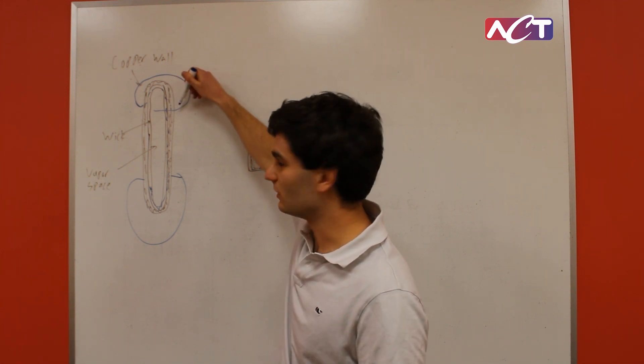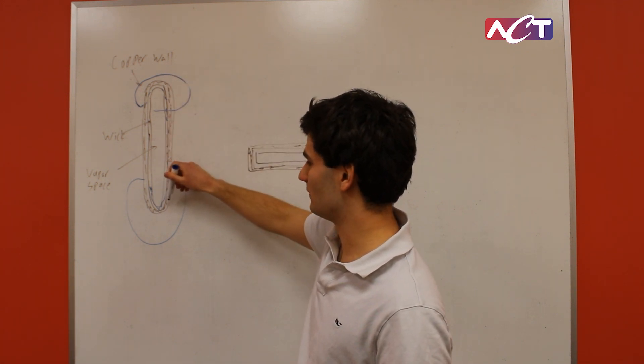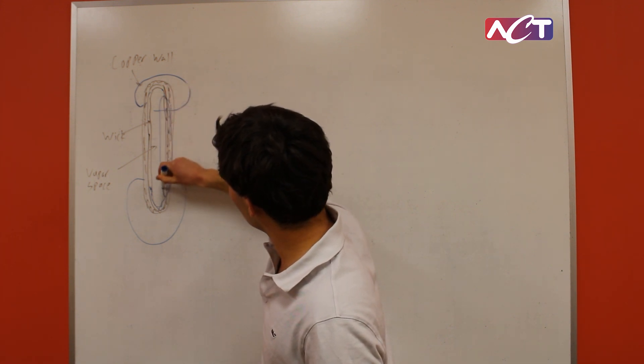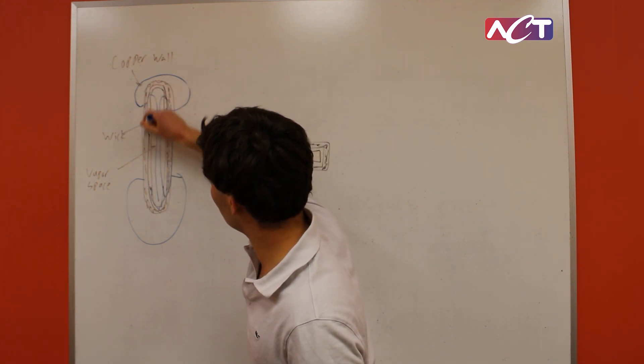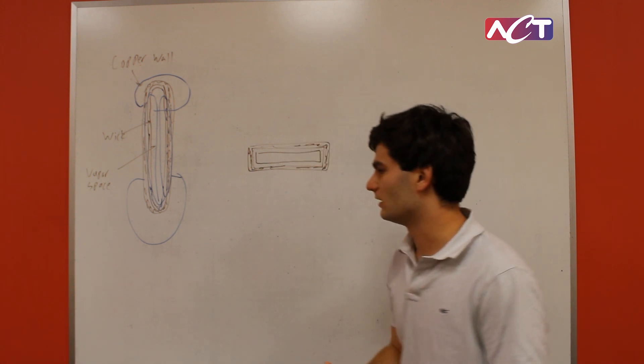And then the wick would use the capillary force to pump it back to the evaporator, and so you get this little loop path through the wick and the vapor space to transport the heat.